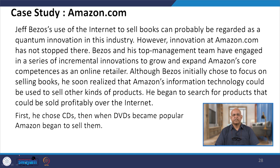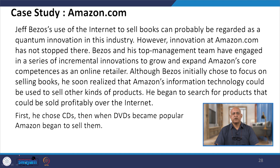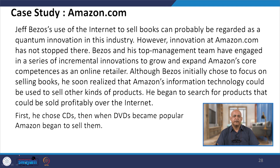Now I will talk about the Amazon.com case study. Jeff Bezos's use of the internet to sell books can probably be regarded as a quantum innovation in the industry. However, innovations at Amazon.com have not stopped there. Bezos and his top management team engaged in a series of incremental innovations to grow and expand Amazon's core competencies as an online retailer. Although Bezos initially chose to focus on selling books, he soon realized that Amazon's information technology could be used to sell other kinds of products. Nowadays, Amazon is coming out with groceries and daily routine items including grains.